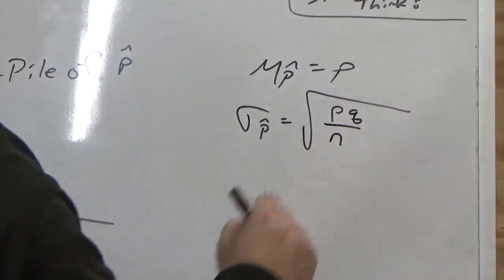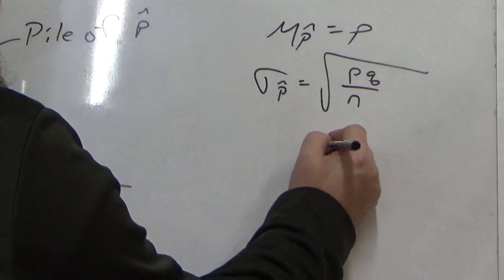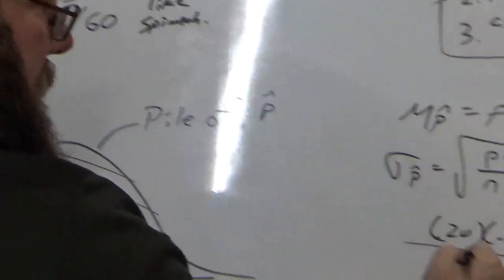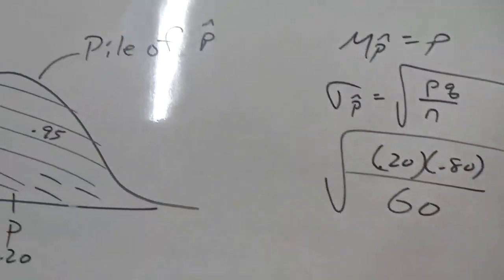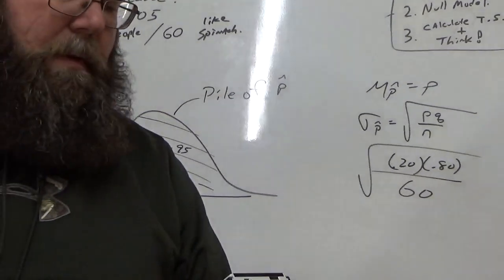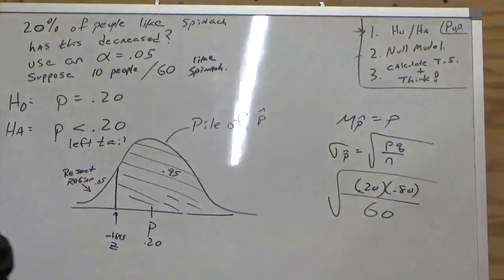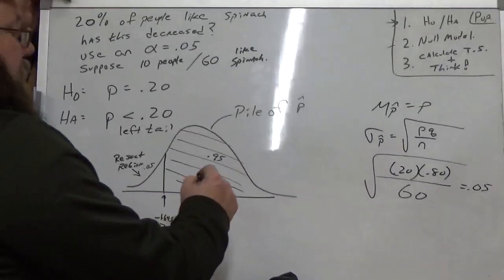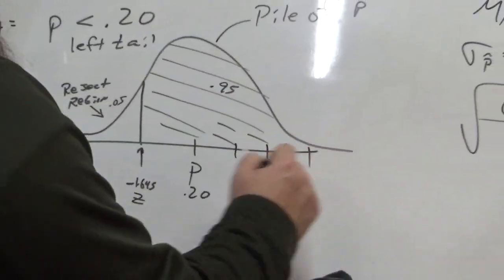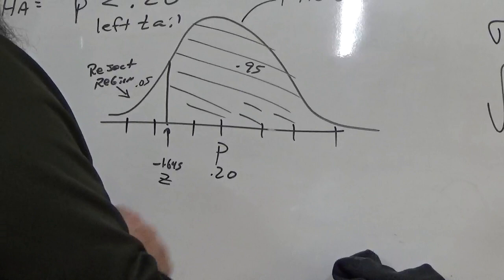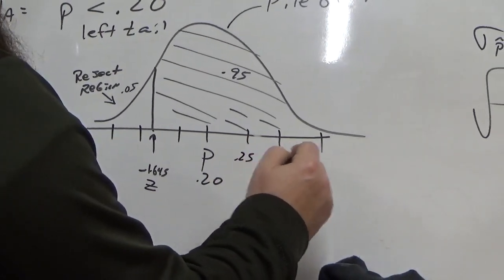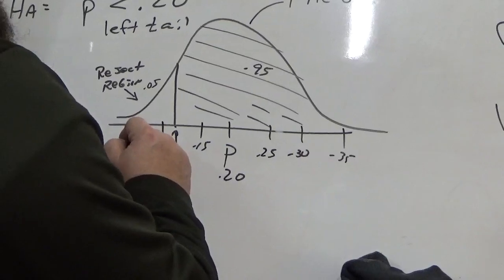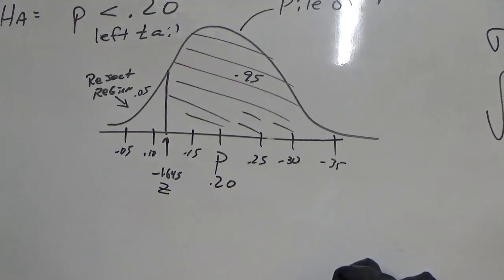So, standard deviation of all the P-hats is square root of P times Q divided by N. So, P is 0.20. Q is 0.80. N, in this case, 60 people. I already calculated that for you. 0.05. So, that's roughly 0.05. So, our standard deviation is 0.05. So, if I go up one standard deviation, there's 2, there's 3. If I go down 1, go down 2, go down 3. If I go up 0.05, that's 0.25, 0.30, 0.35. If I go down 1, it's 0.15, 0.10, and then 0.05. So, there's our normal model.